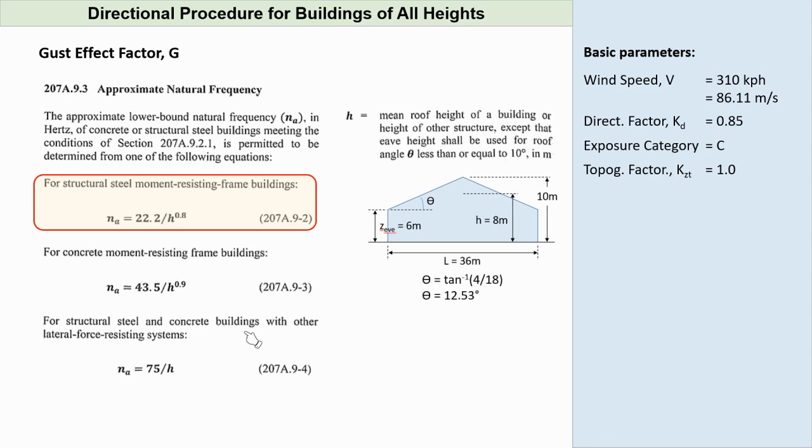Using simple geometry, we can see that our roof angle is 12.5 degrees. This is greater than 10 degrees so we can use a value of H equal to 8 meters. Substituting this value to the formula, we can get a natural frequency of 4.2 Hz. Since this value is greater than 1, we can consider our structure as rigid.